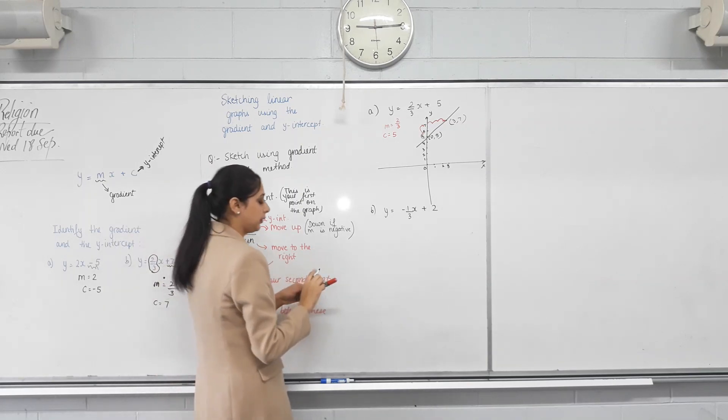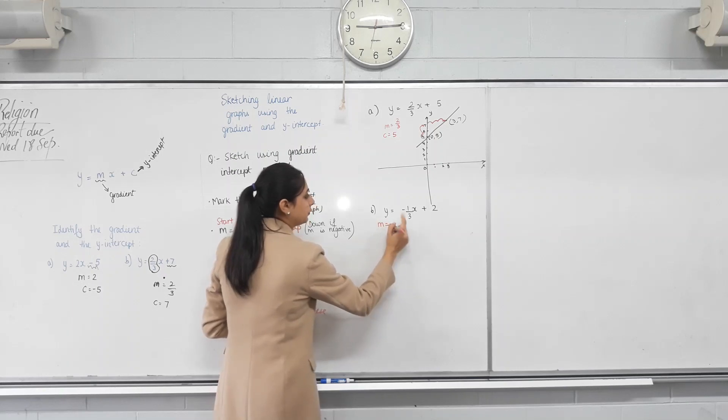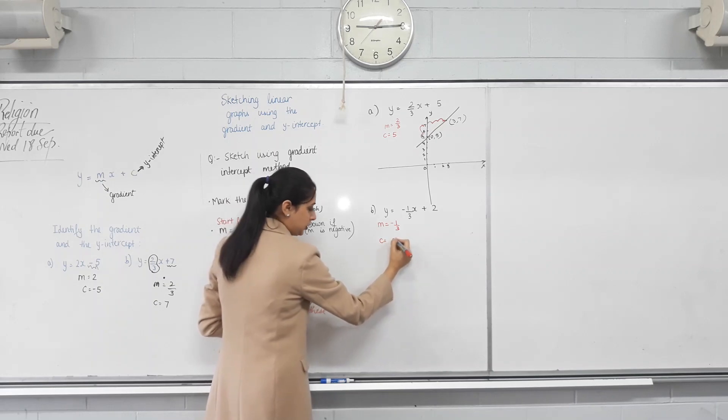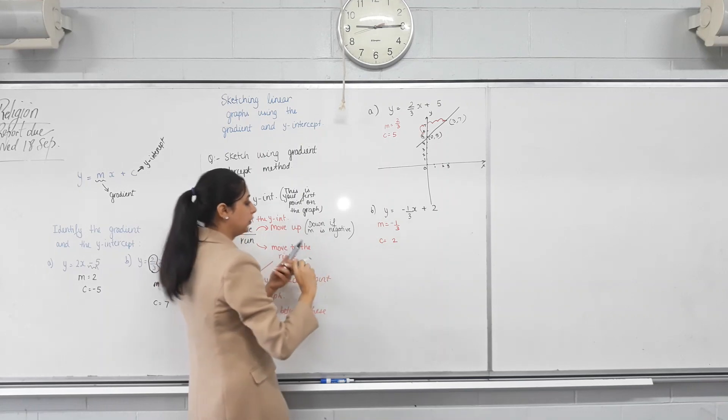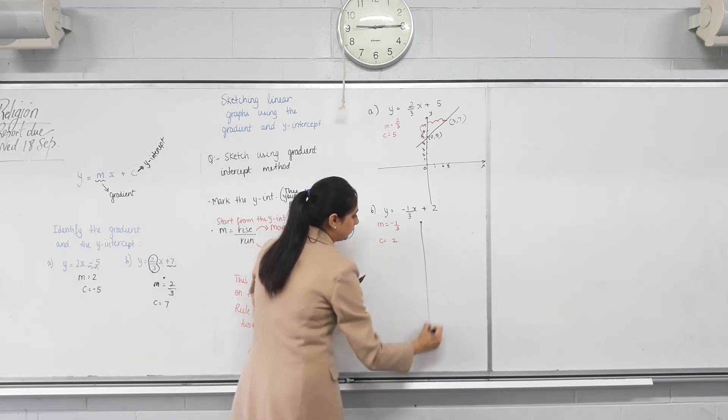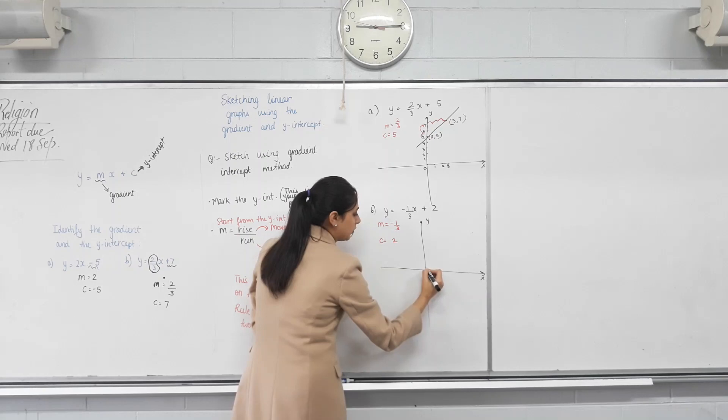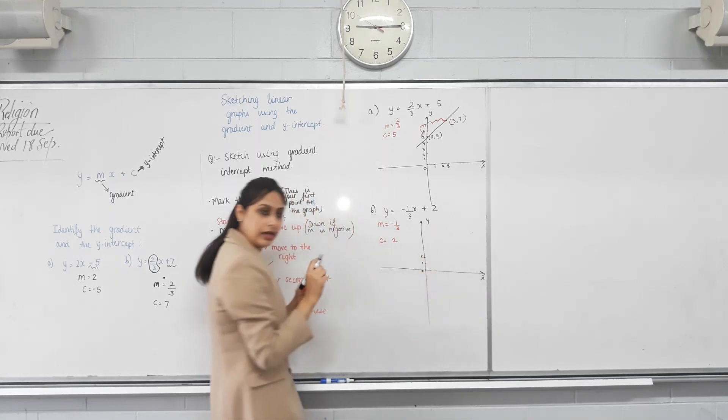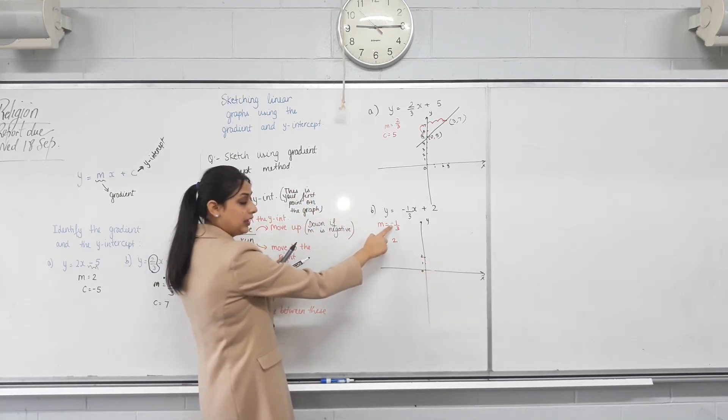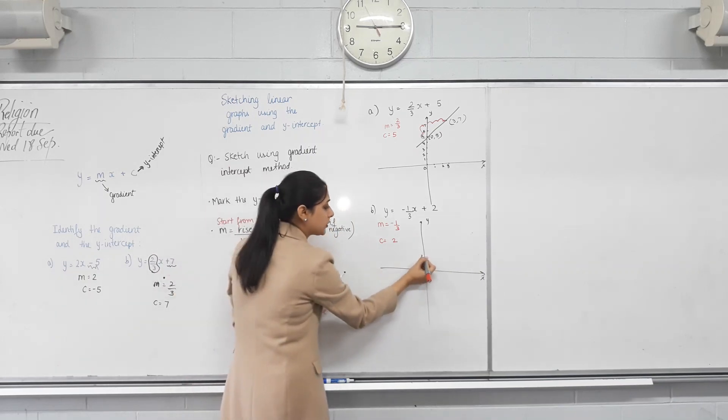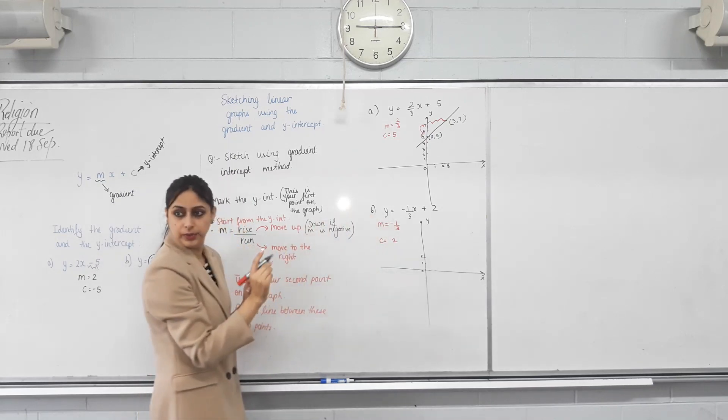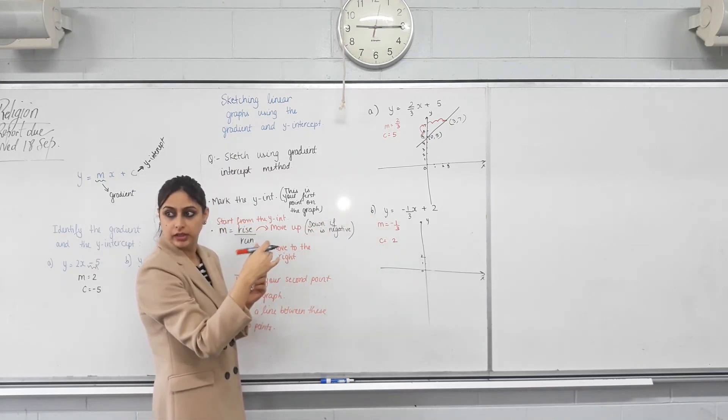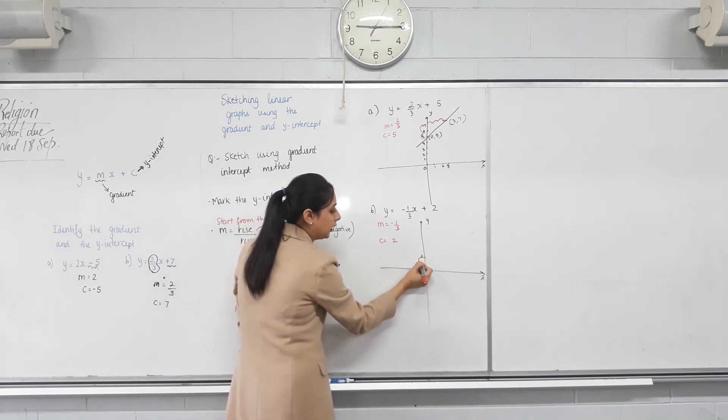What's the gradient of this line? Negative one over three. Negative one over three. What's the line to seven? Two. Two. What's the first point on the graph? Two. Two. Let's start from two. Two on the y-axis. So, one, two. Two. Yes? Now, our gradient is negative. So, from our first point, we move down. How many units? One. One. Because it's not rising, it's falling. The gradient is negative. So, we move down one unit.